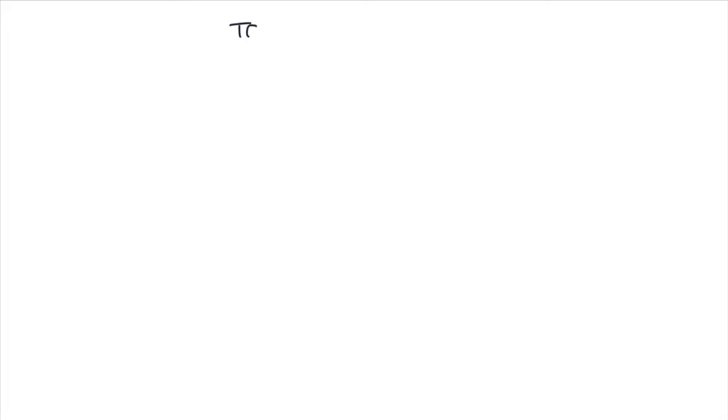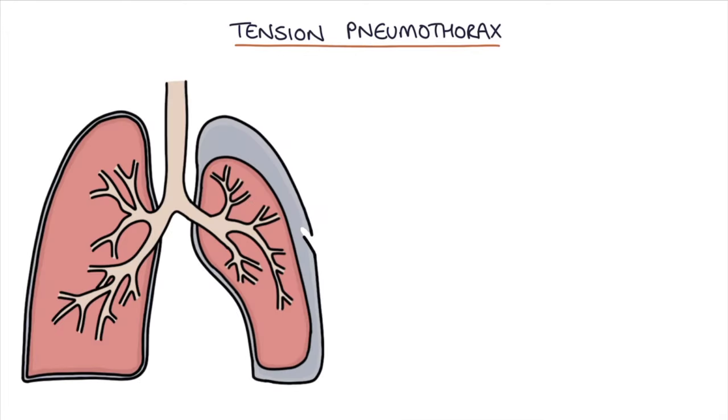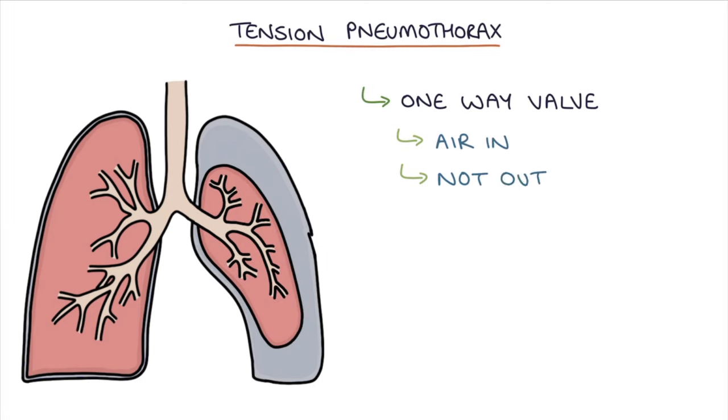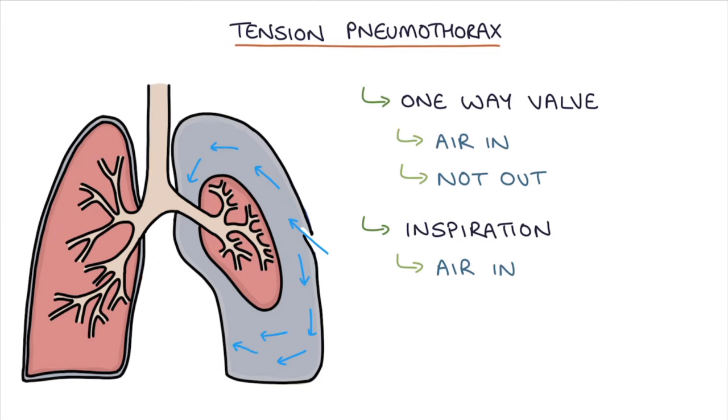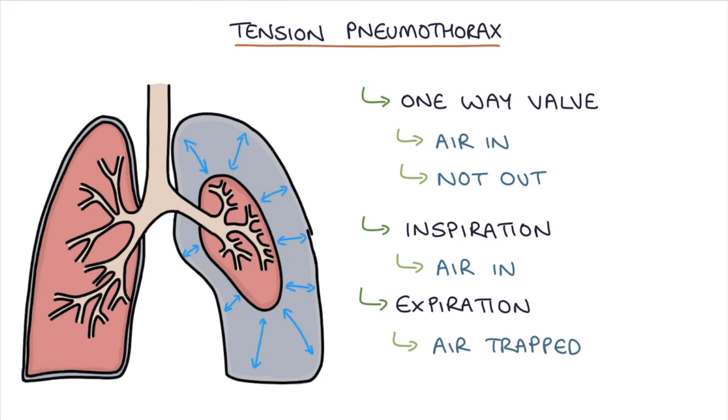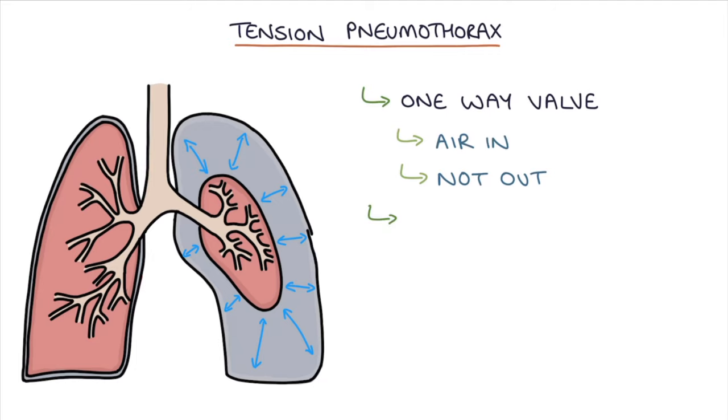We need to talk about something called a tension pneumothorax. A tension pneumothorax is caused by trauma to the chest wall that creates a one-way valve that lets air into the pneumothorax but doesn't let it out of the pleural space. The one-way valve means that during inspiration air is drawn into the pleural space, and during expiration the air is trapped. Therefore more air keeps filling into the pleural space with each breath and it can't escape.